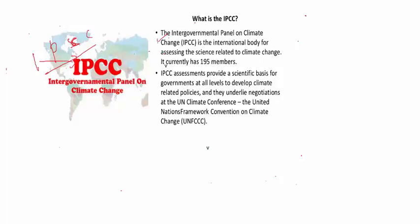The International Panel on Climate Change is the international body for assessing the science related to climate change. The key word is climate change, so you have to remember it is all about climate change. And currently it has 195 members. In the later part of this video, we are going to learn how this IPCC was established.